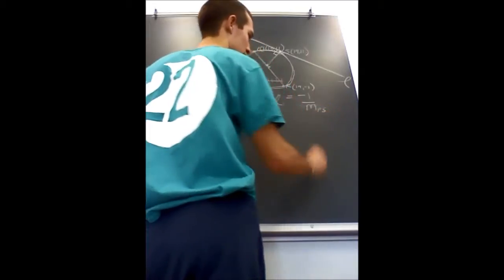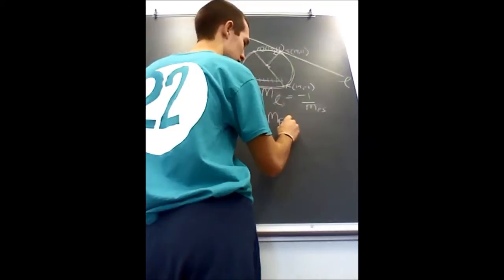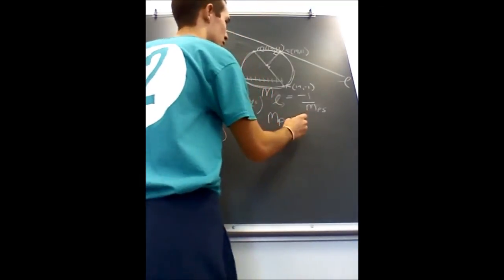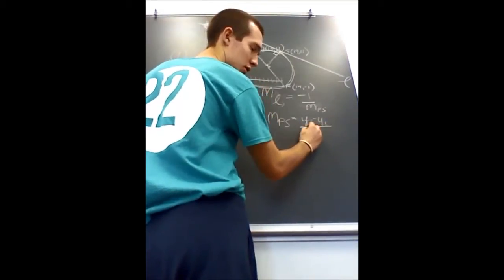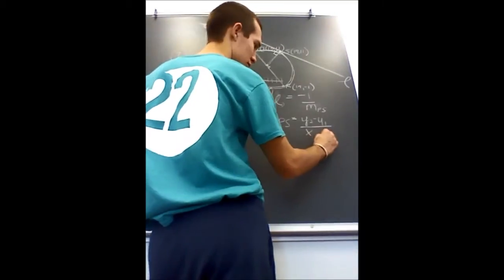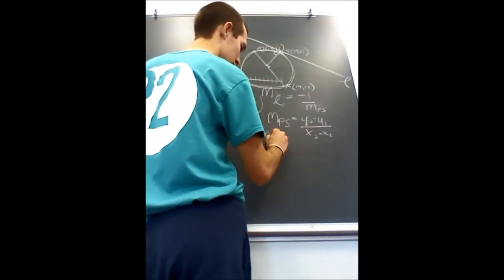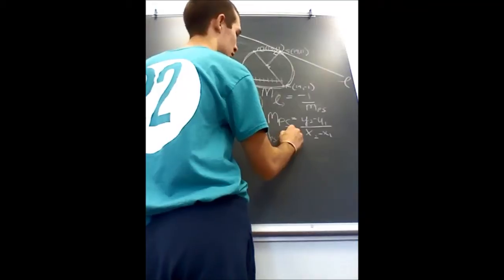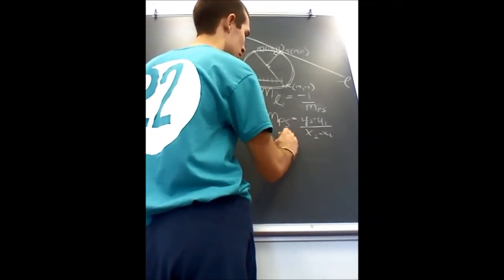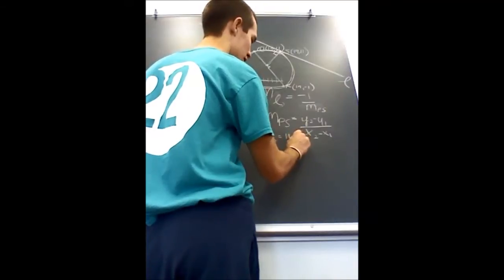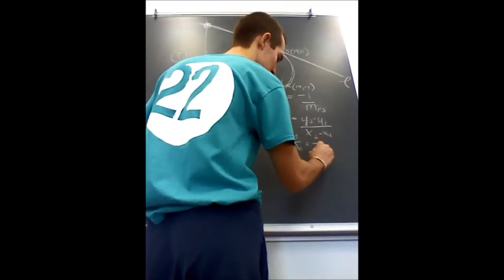So first we need to find the slope of PS, which would be equal to the formula y2 minus y1 over x2 minus x1, which means the slope of PS would be 11 minus 5 over 19 minus 16, which would be equal to 2.